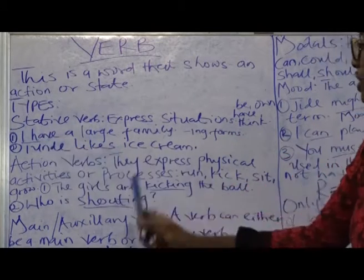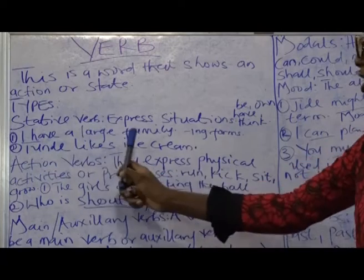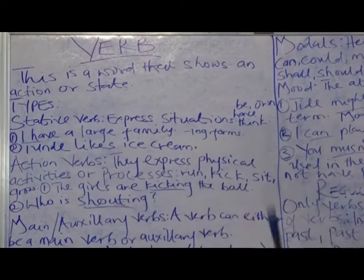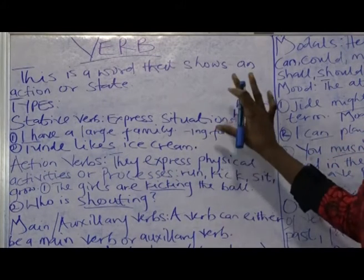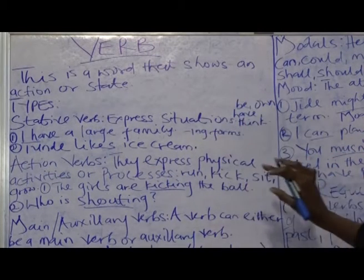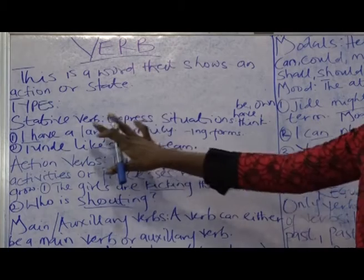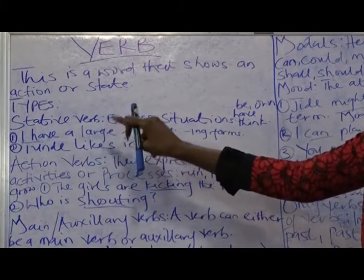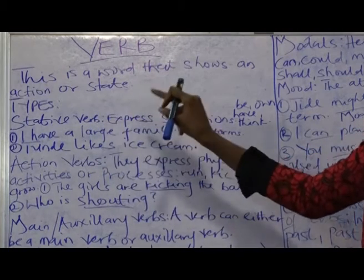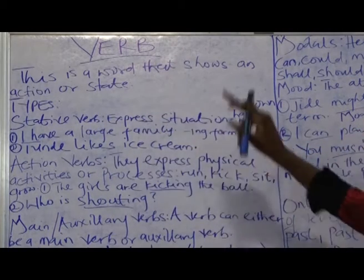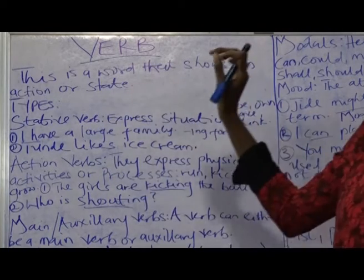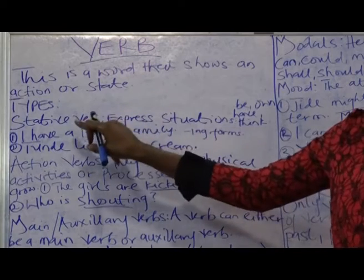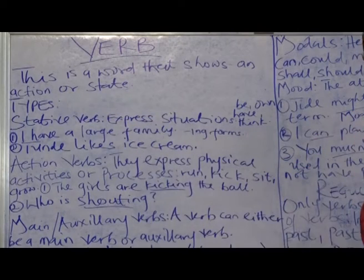Correct forms: I have a large family. Tunde likes ice cream. That is it for stative verbs. These verbs can also be called state verbs. So, if you hear 'state verbs,' just know that they are referring to stative verbs.